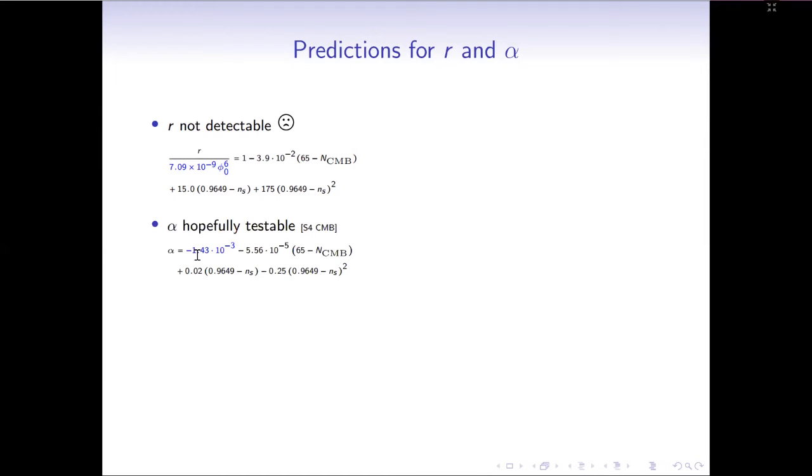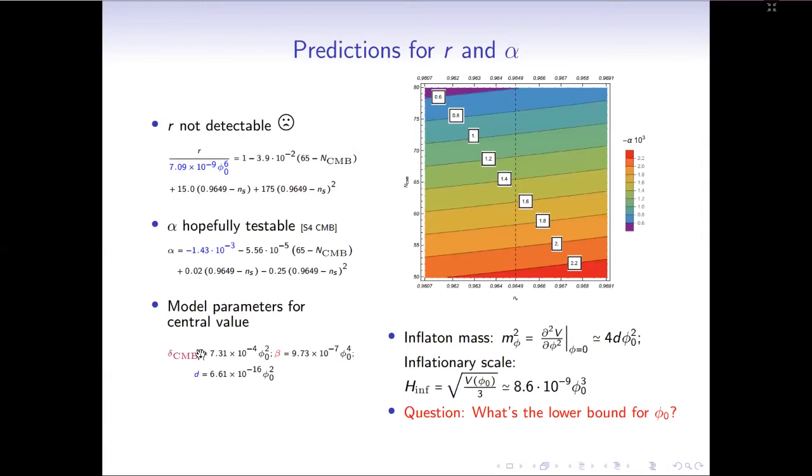And here is a prediction for the running. If we consider the central value with n_s along this line with N_CMB around 60, we see alpha is of order 10 to minus 3, which is hopefully detectable in the future. And with these model parameters, we can now calculate the inflaton mass and the inflationary scale. We see both the inflaton mass and the inflationary scale are actually determined by a single parameter, namely the location of inflection point.